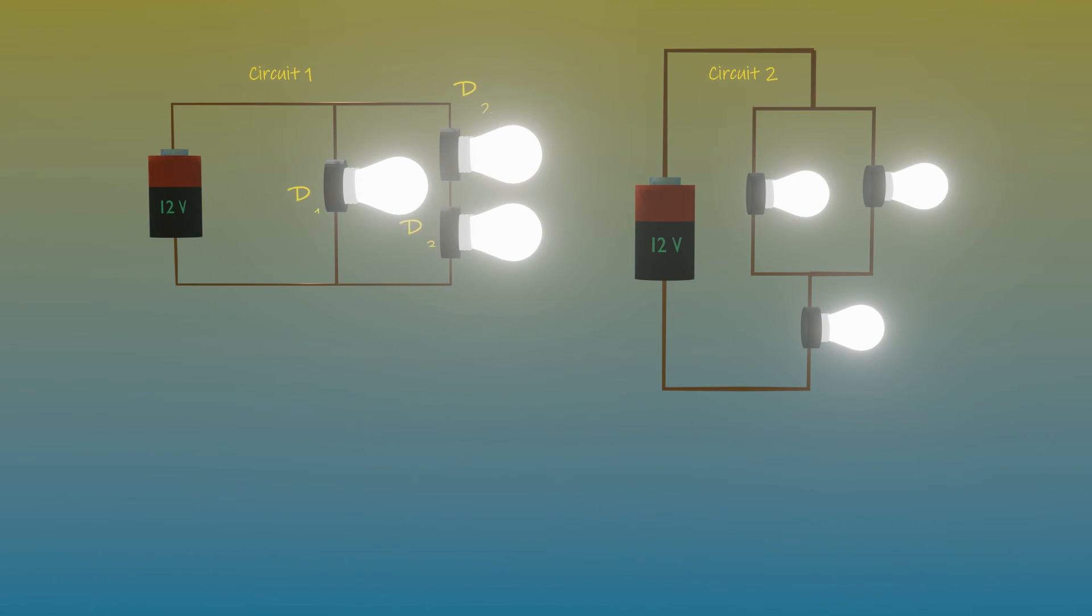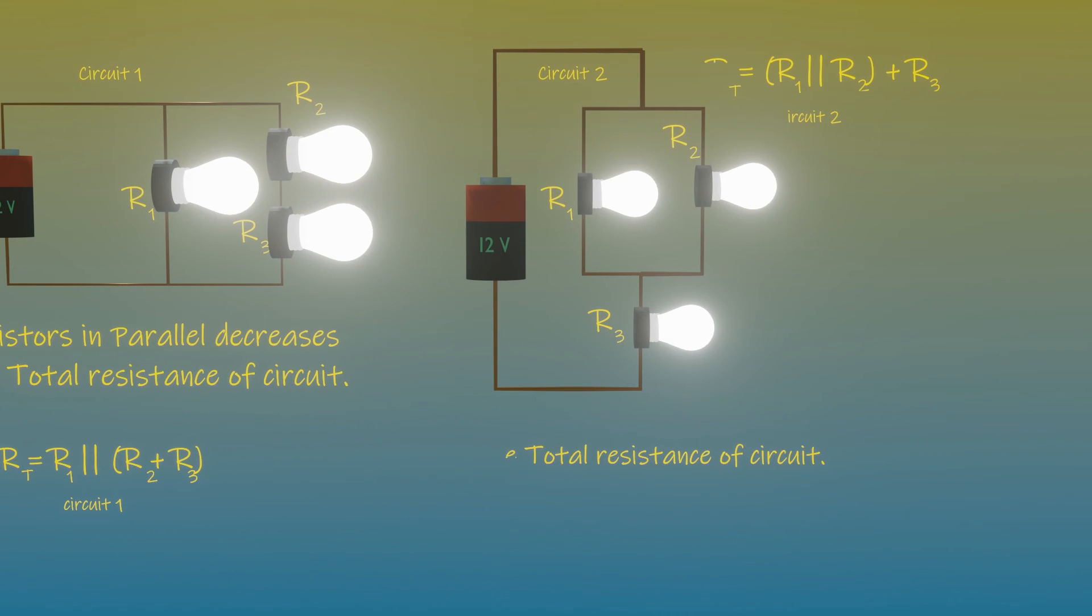Remember, when you add a resistor in parallel with another, you always decrease the overall resistance. And when you add a resistor in series, you always increase the overall resistance.